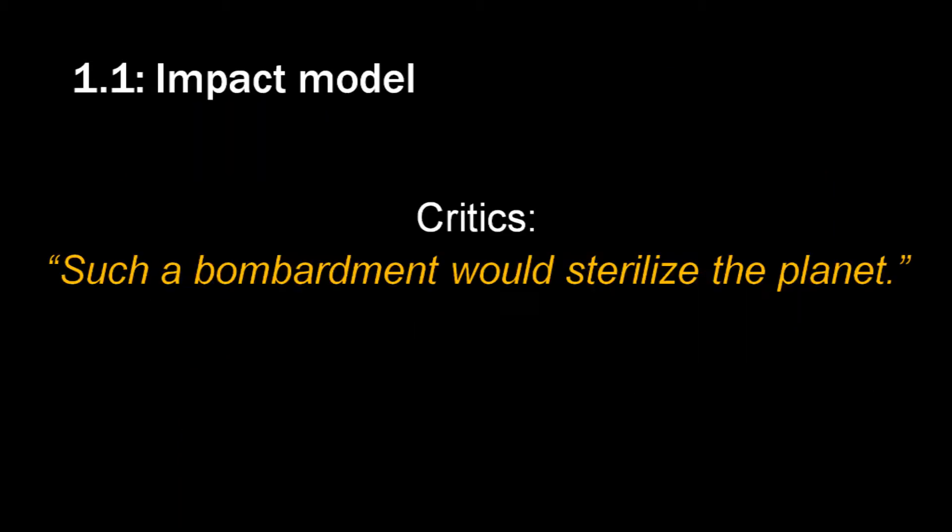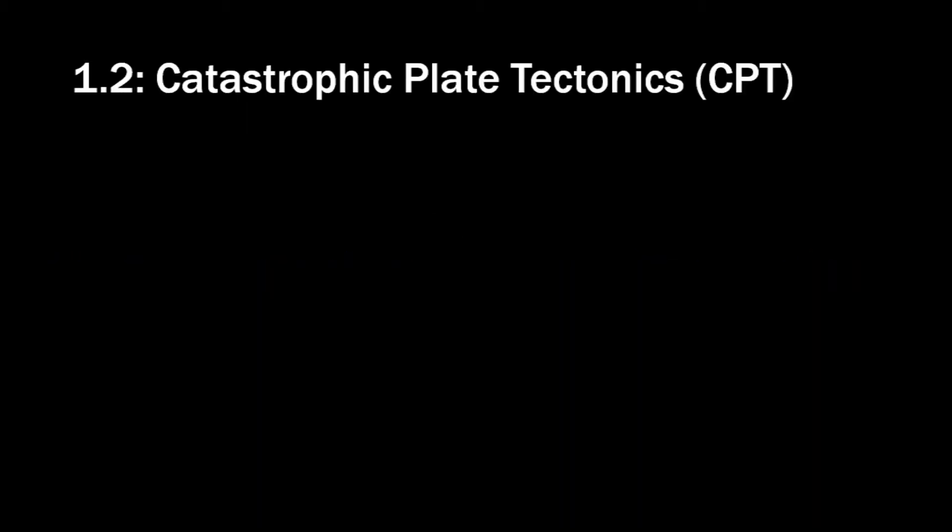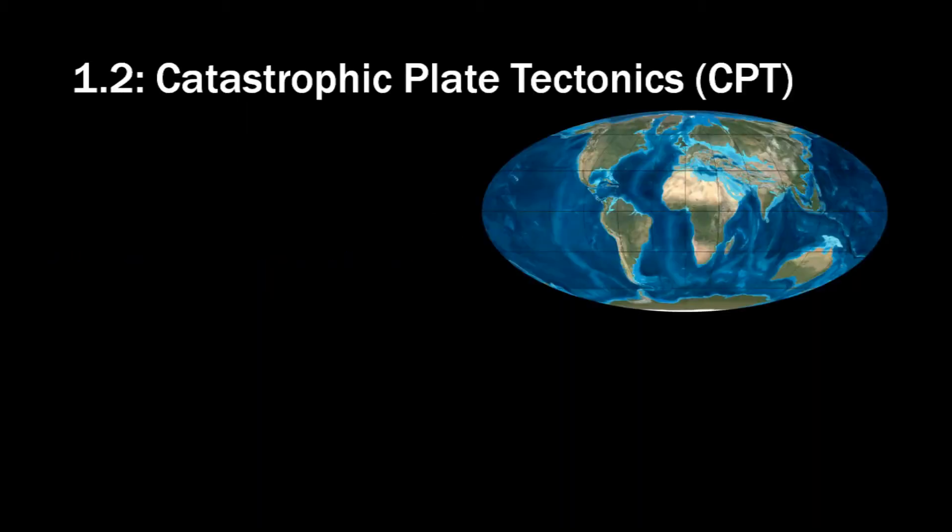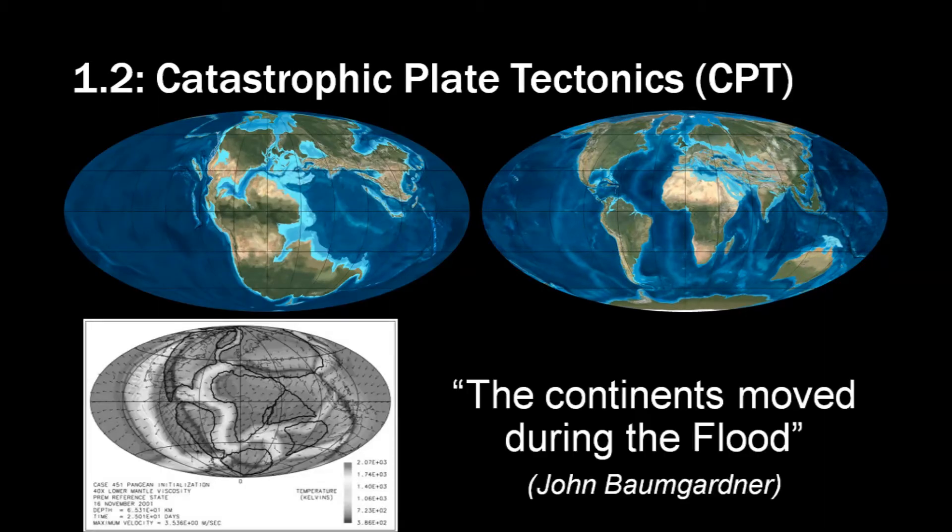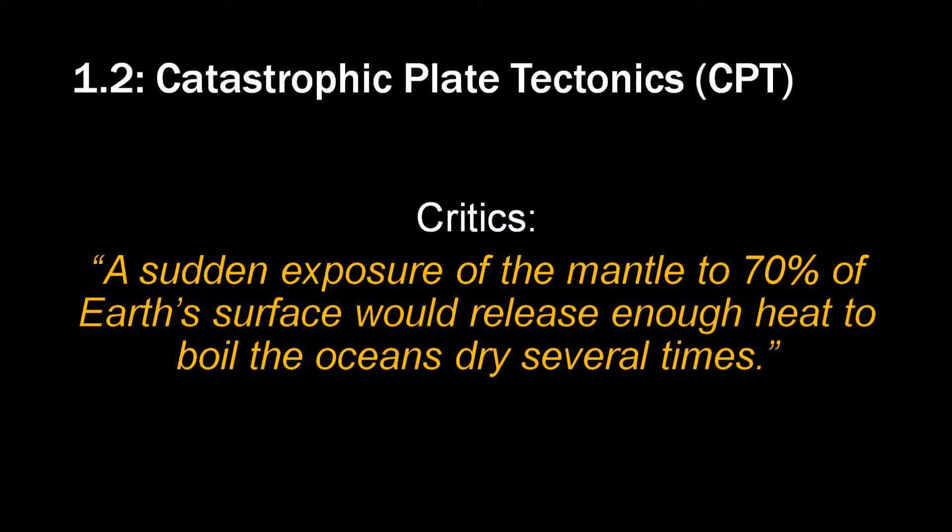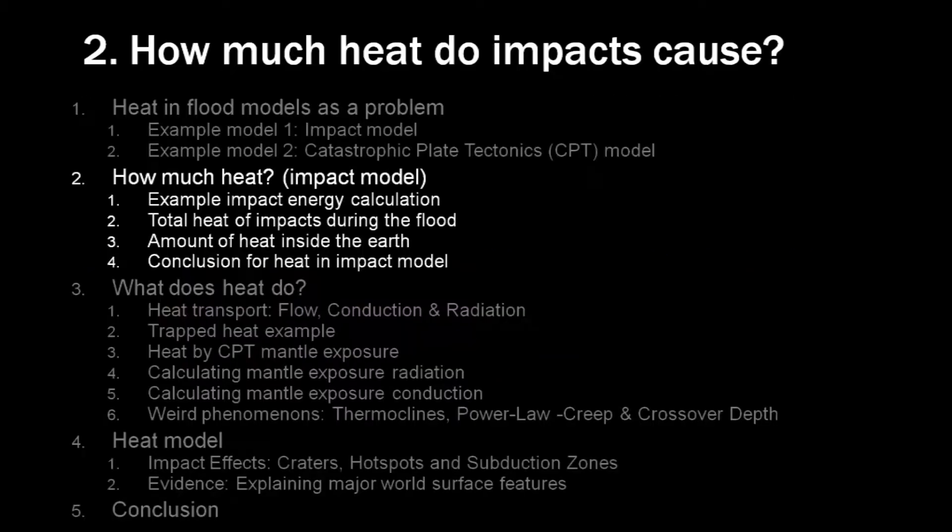And since all of the bodies in the solar system show craters, the Earth could not have been missed. Critics say though that such a bombardment would sterilize the planet. John Baumgartner says in his model this is the Earth we have today, but this is what the Earth looked like before the flood. So he says the continents moved during the flood. And also critics say a sudden exposure of the mantle to 70% of Earth's surface would release enough heat to boil the oceans dry several times.